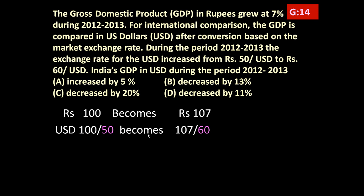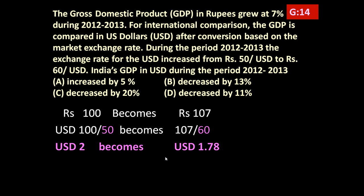At the end of the year, 100 rupees becomes 107 rupees, and the dollar exchange rate becomes 60 rupees per US dollar. So the 2 dollars we had initially — in the new rate, 107 rupees divided by 60 gives us 1.78 US dollars. So 2 dollars becomes 1.78 US dollars.